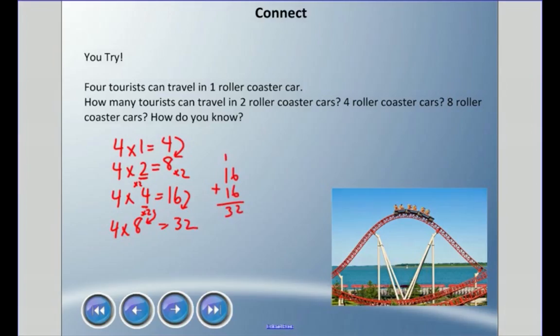So the answer is 32. In sentence form: 8 tourists can travel in 2 roller coaster cars, 16 can travel in 4 roller coaster cars, and 32 tourists can travel in 8 roller coaster cars.